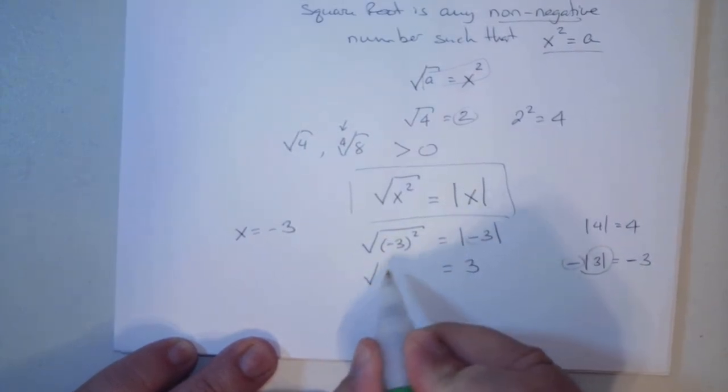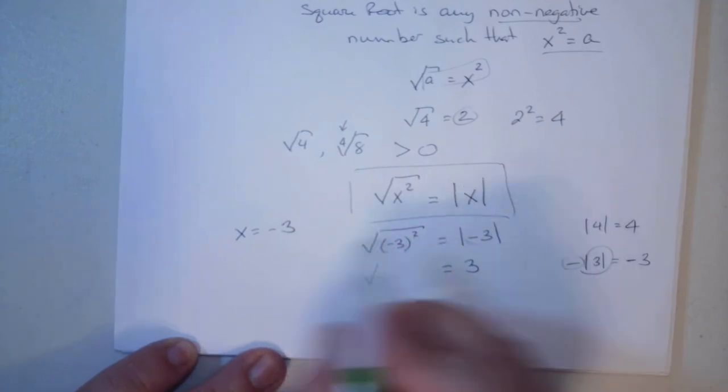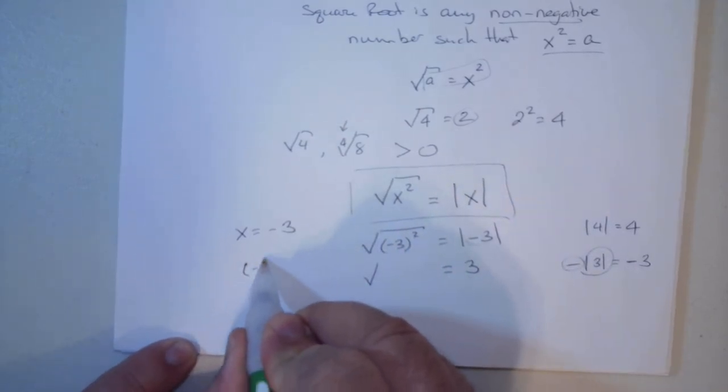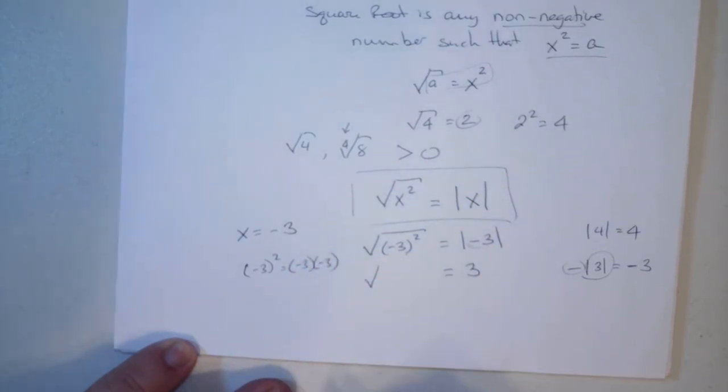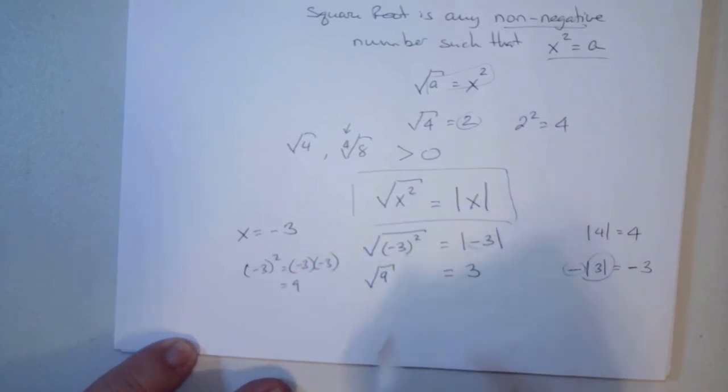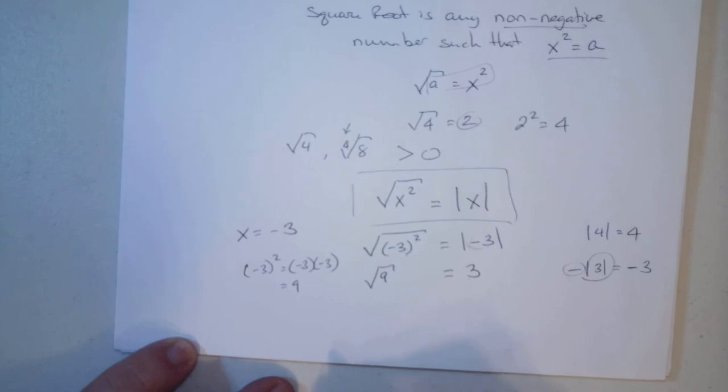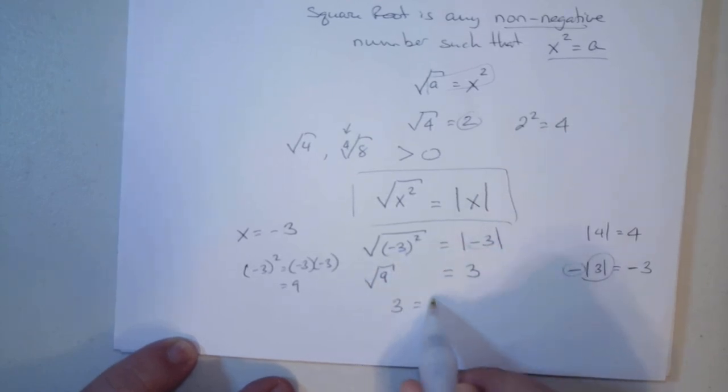But anything inside there works that way. So let's look at this. Order of operations, you have to do inside. Negative 3 squared is negative 3 times negative 3. Negative times negative is positive. 3 times 3 is 9. So negative 3 squared is 9. Square root of 9 is 3.